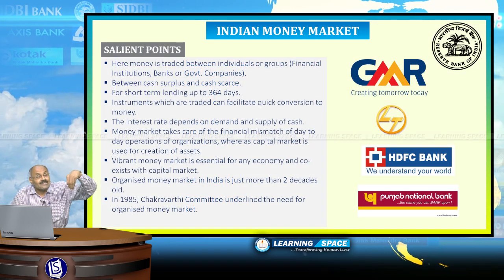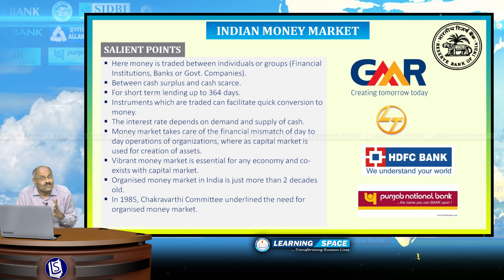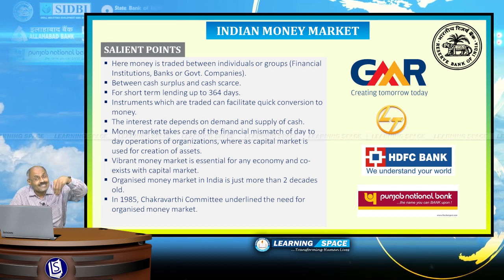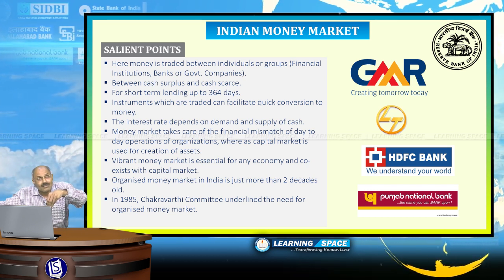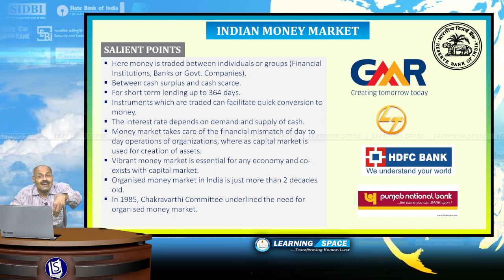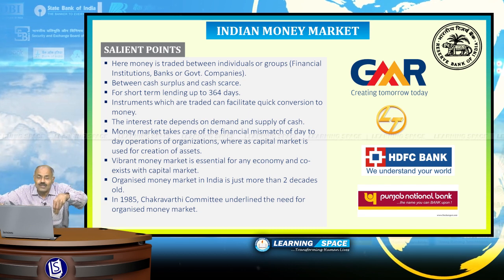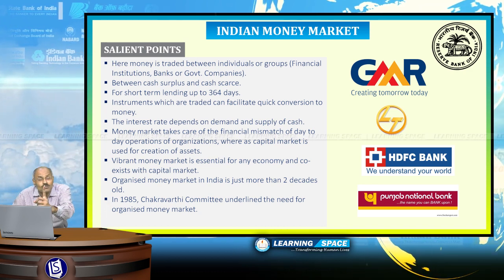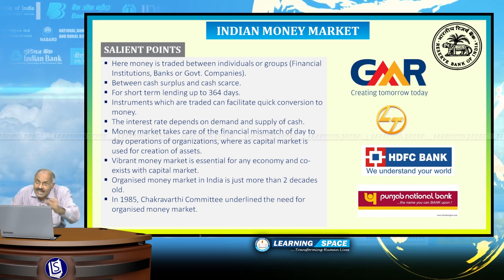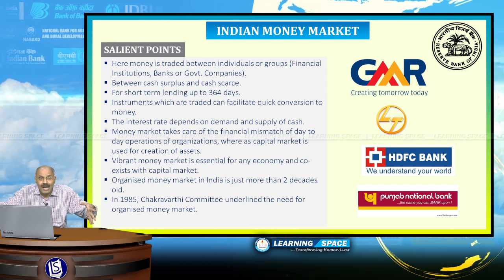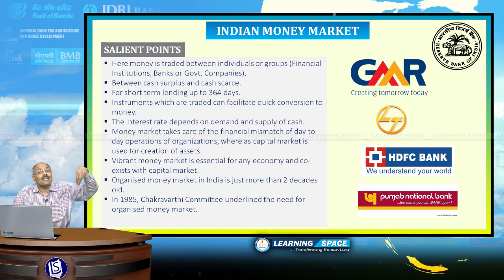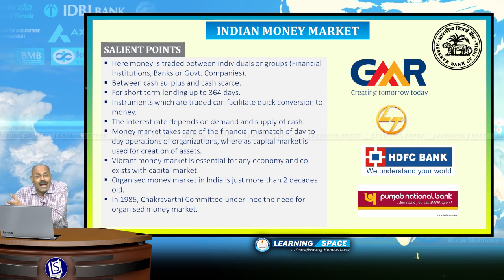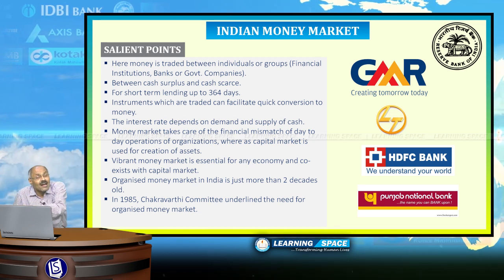Money market is money traded between individuals or groups — normally financial institutions and banks participate. These instruments have a period of up to 364 days, with a few exceptions. Money market instruments allow quick conversion of money without much loss of value. Capital market instruments, however, cannot be converted into money at any time you want — that is the major difference. This organized money market evolved in India subsequent to the 1980s.